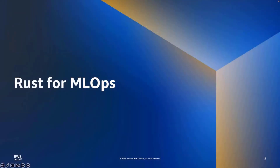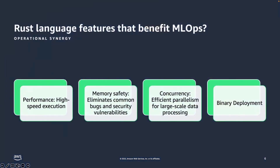Let's get into Rust for ML Ops and talk about performance, memory safety, and concurrency features. The performance benefits compared to a language like Python are significant — anywhere from 50 to 1,000 times faster due to its compiled nature and low memory usage. Rust performance leads to faster model training and inference, reducing cost, which is key in cloud computing. Memory safety eliminates common bugs and security vulnerabilities, critical for ML Ops where large datasets and models can cause memory-related issues.